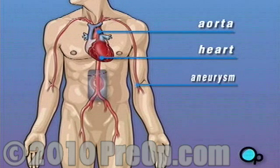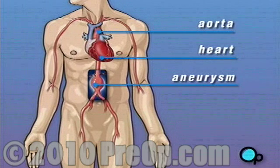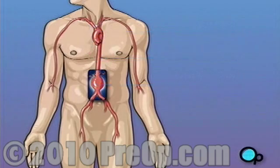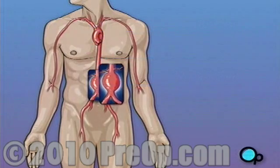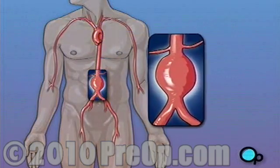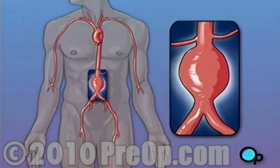An aneurysm is a bulge or swelling in a blood vessel. This type of bulge occurs when a blood clot develops in the aorta, causing it to expand.